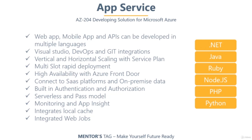You can connect with existing SaaS platforms or data running on on-premise servers, and take care of security with authentication and authorization. You can use either the pure PaaS model or convert to a serverless architecture. Monitoring of logged data as well as real-time live data is available through Application Insights. App Services also has an internal local cache and web jobs to run background tasks.